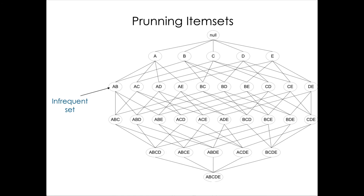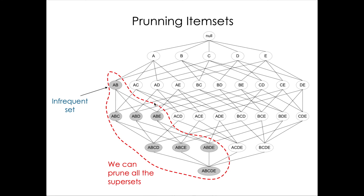We use anti-monotony to prune the item sets we need to search. Once we detect that an item set, say {a, b}, is not frequent, we know that all supersets containing it will not be frequent either. So we can prune them out and avoid counting the frequency of all those item sets — saving significant computation.